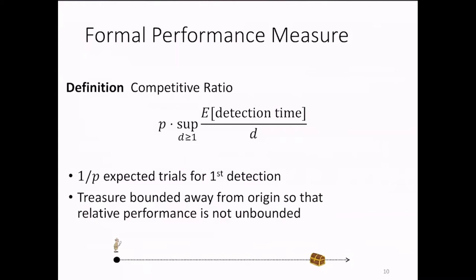We also normalize by the detection probability because even if we knew where the treasure is, we would need an expected one over p trials to find the treasure. And with this normalization, the competitive ratio remains constant, as I will show you later, for every p between 0 and 1. And finally, we require that the treasure is at least one away from the origin. And what I mean here is that this lower bound of one between the treasure and the origin is known to the algorithm, because otherwise one can show that no algorithm can have bounded competitive ratio.